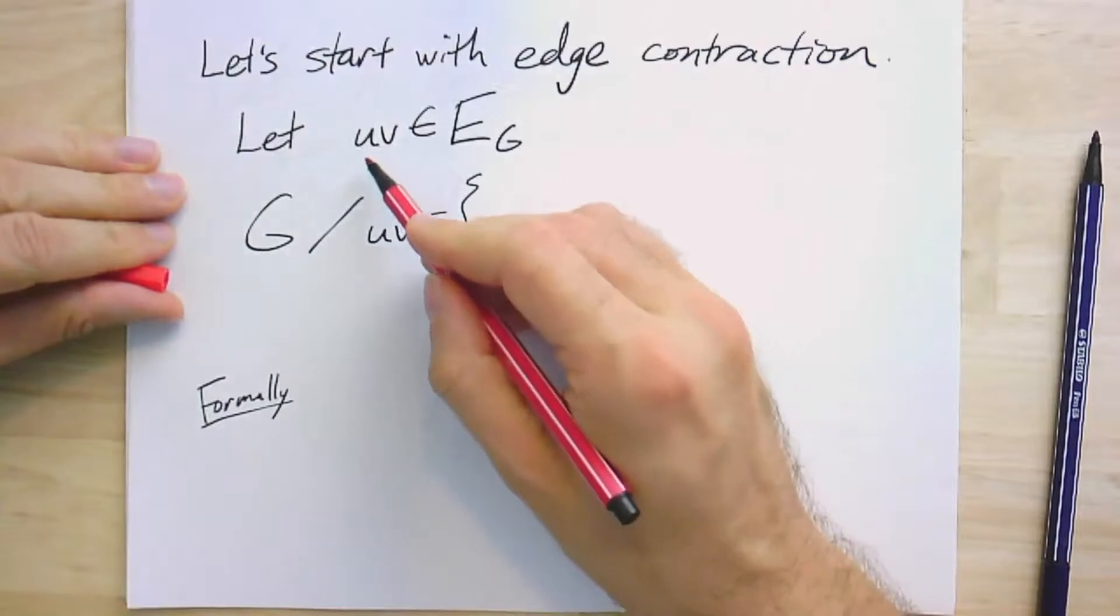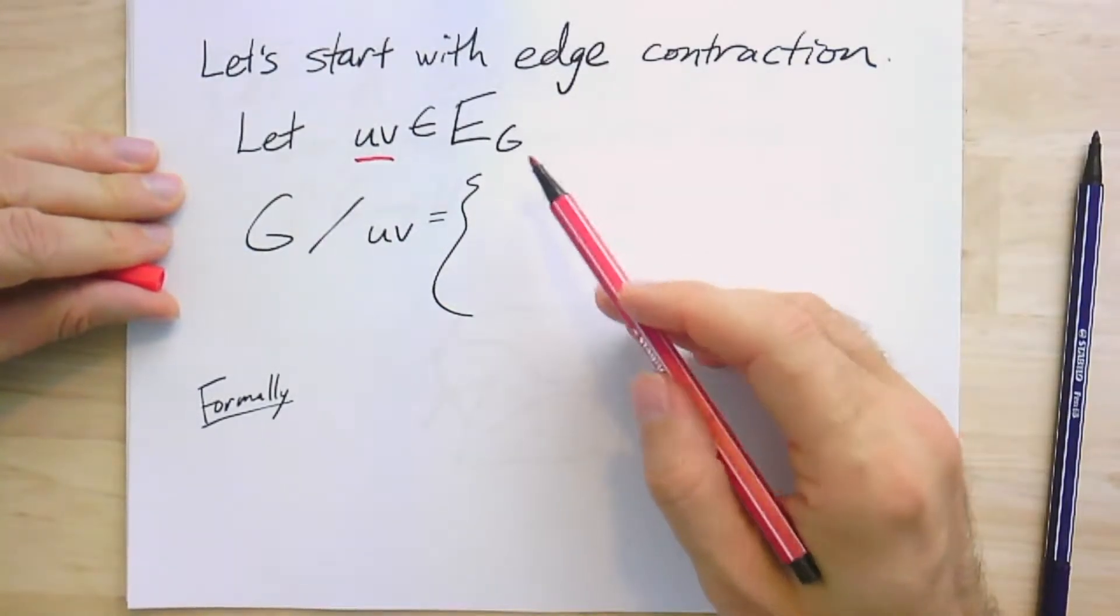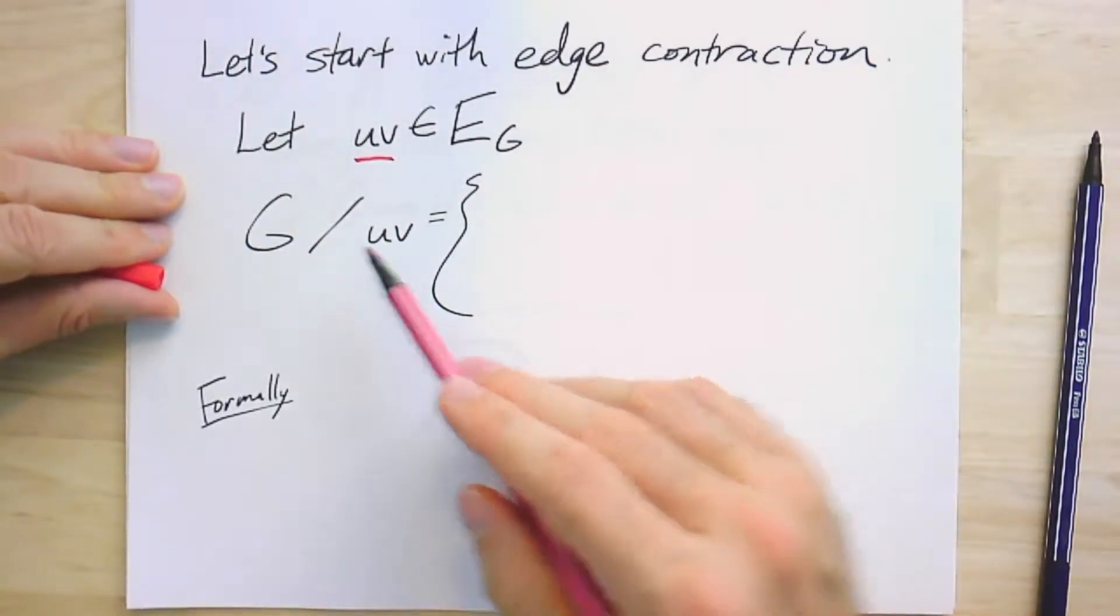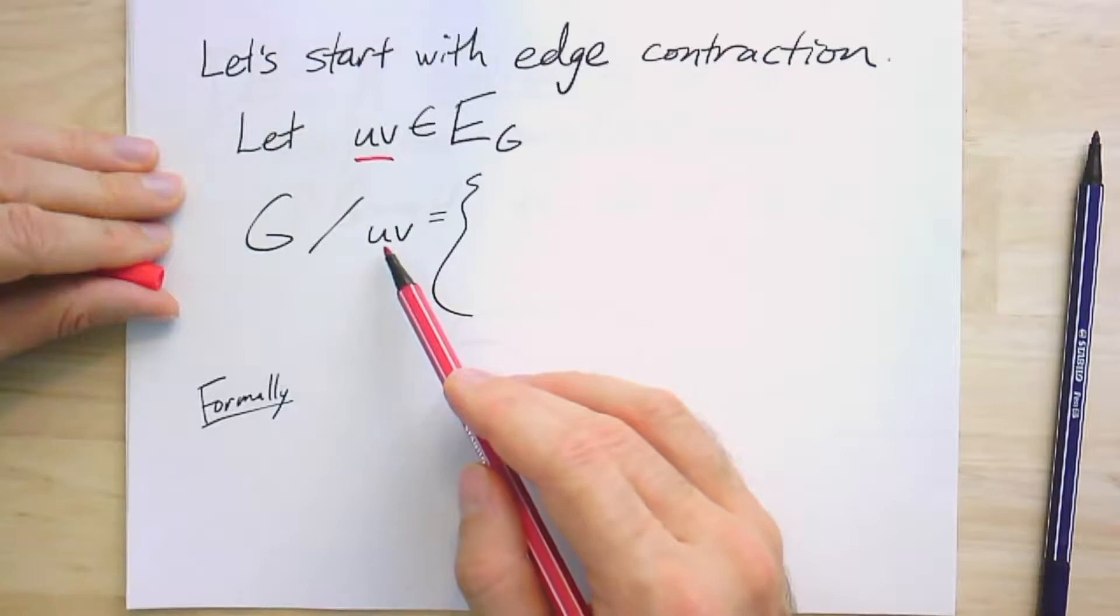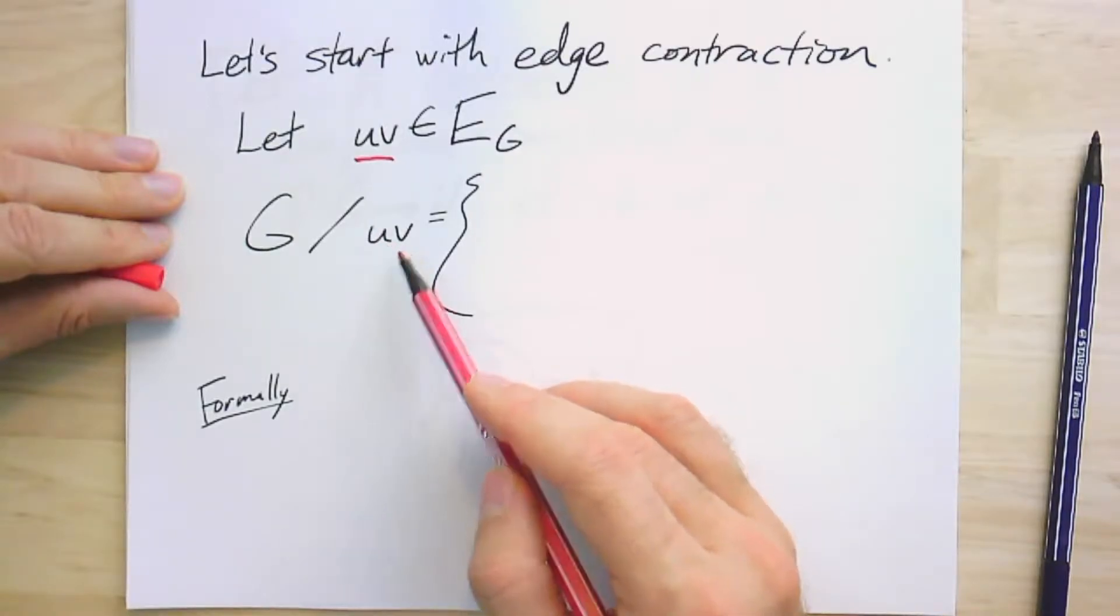If I have a graph G, and I have an edge UV, which is an edge in the graph, I might write G, and this is a division, this is not set minus, so G contracting the edge UV.